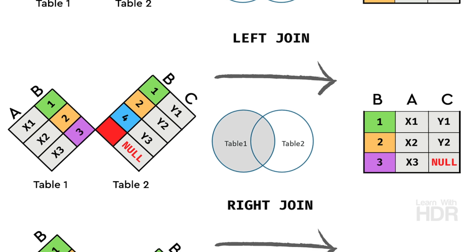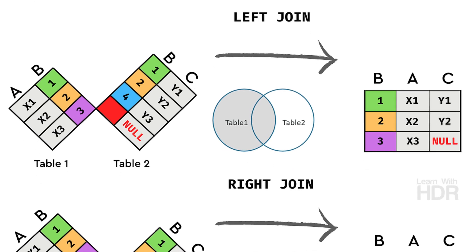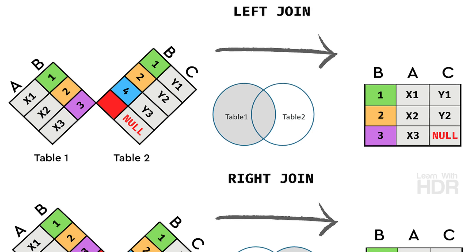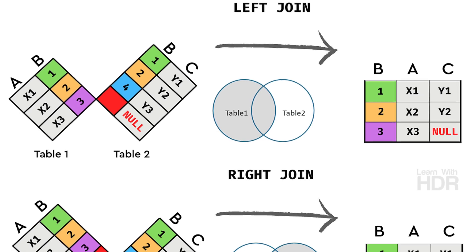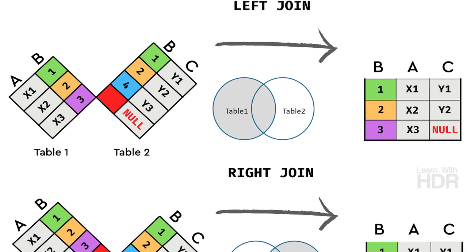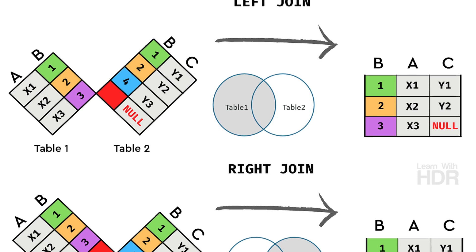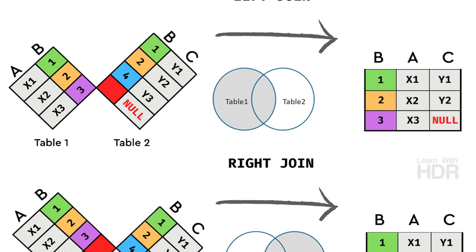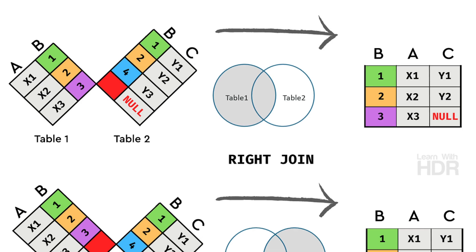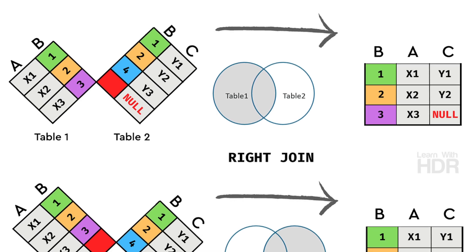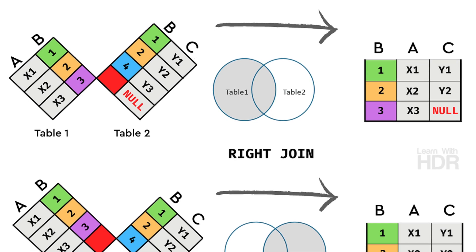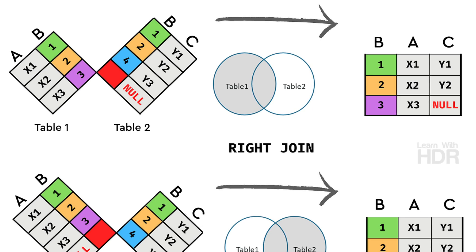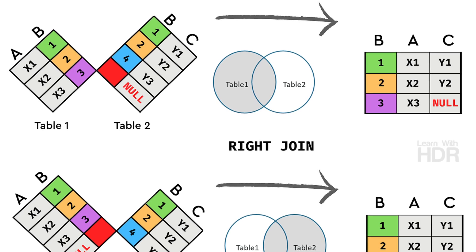Next, left join. This is a set diagram for the left join. In table 1 and table 2, the column A is matched.